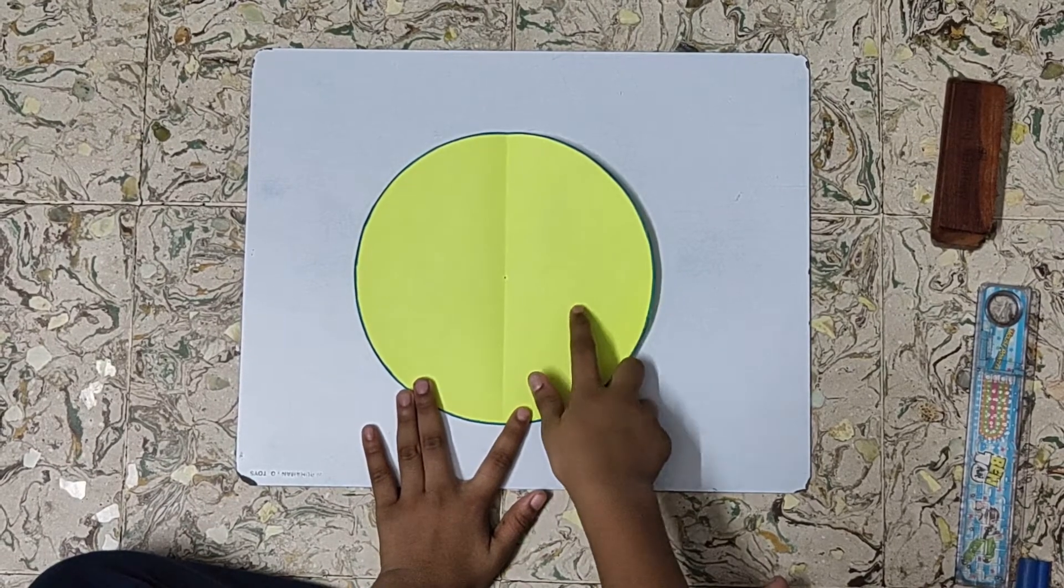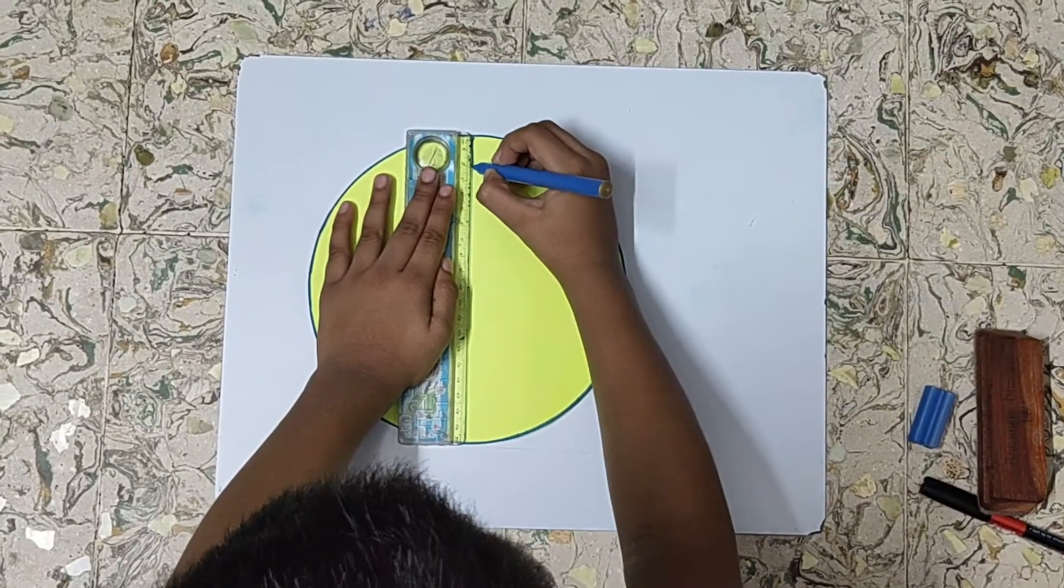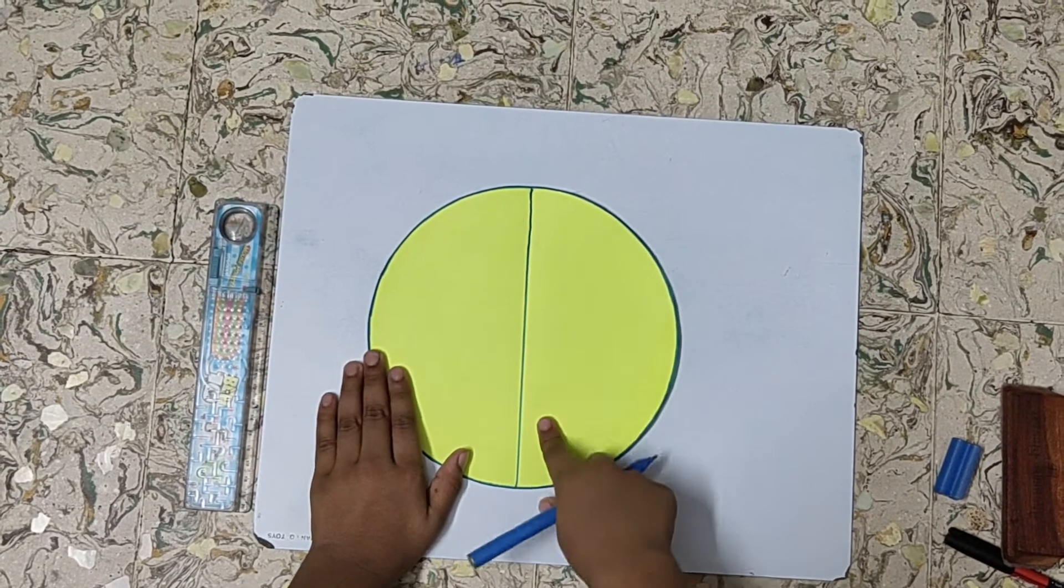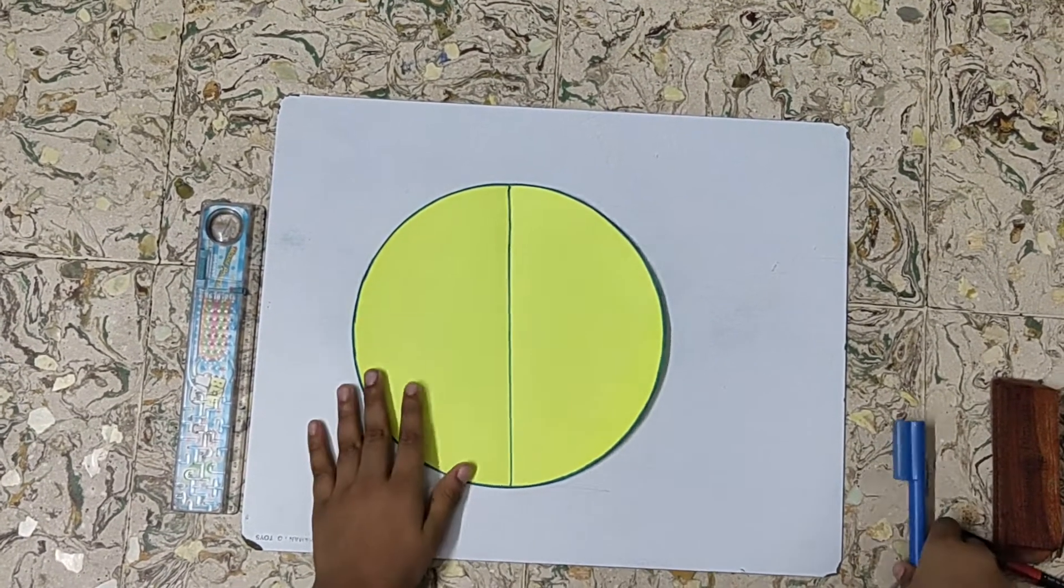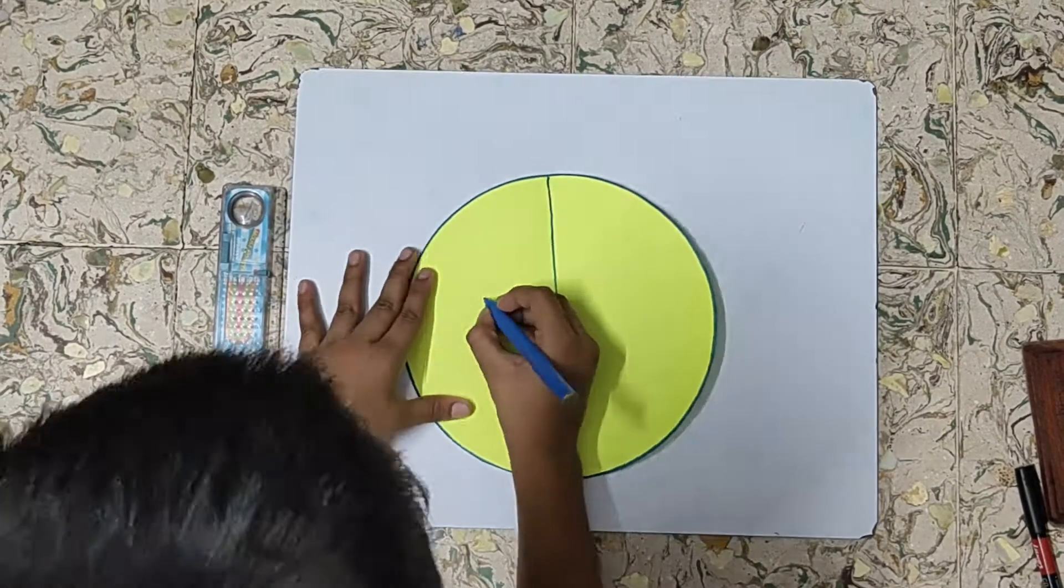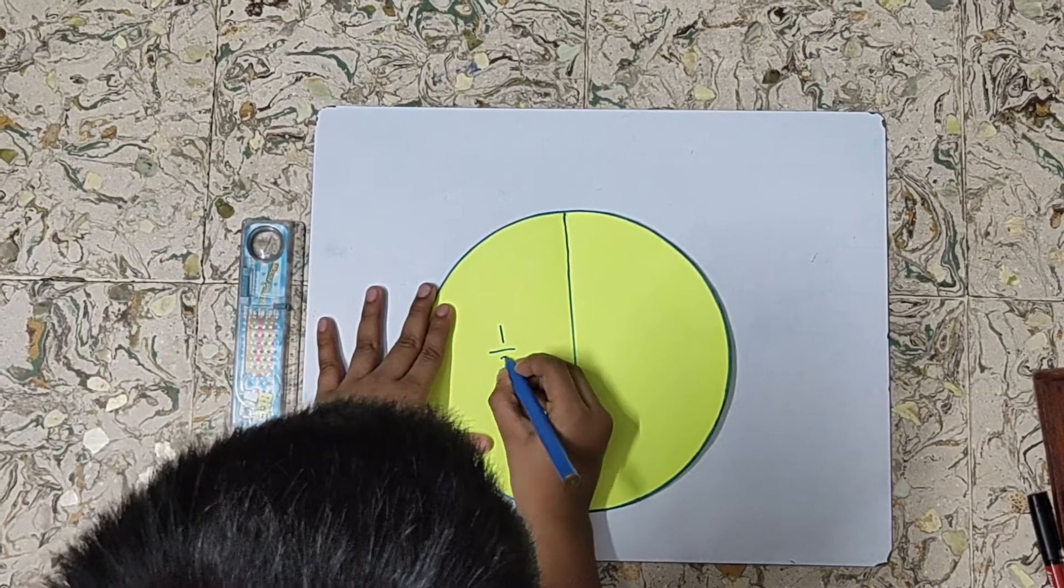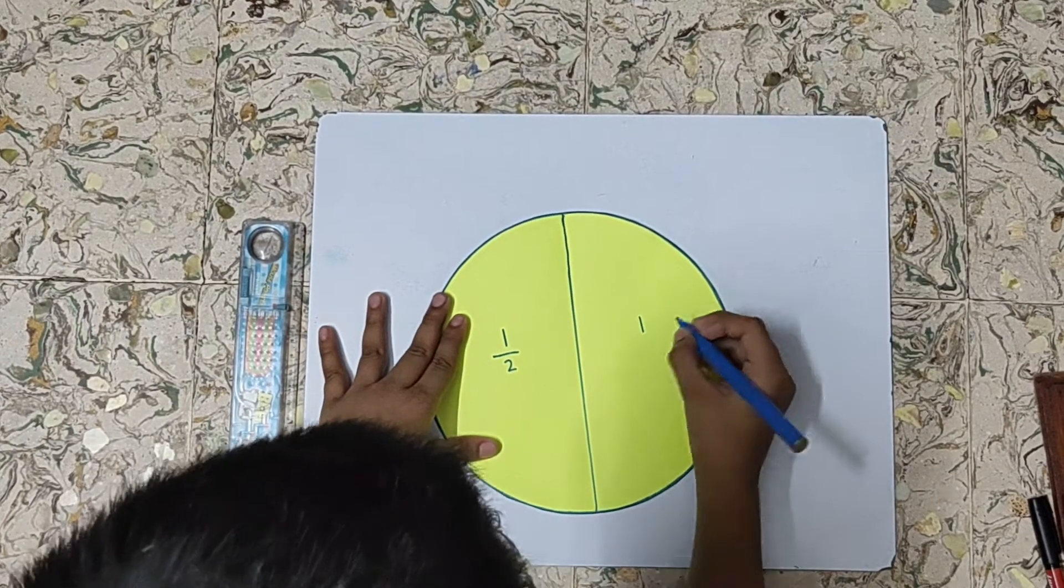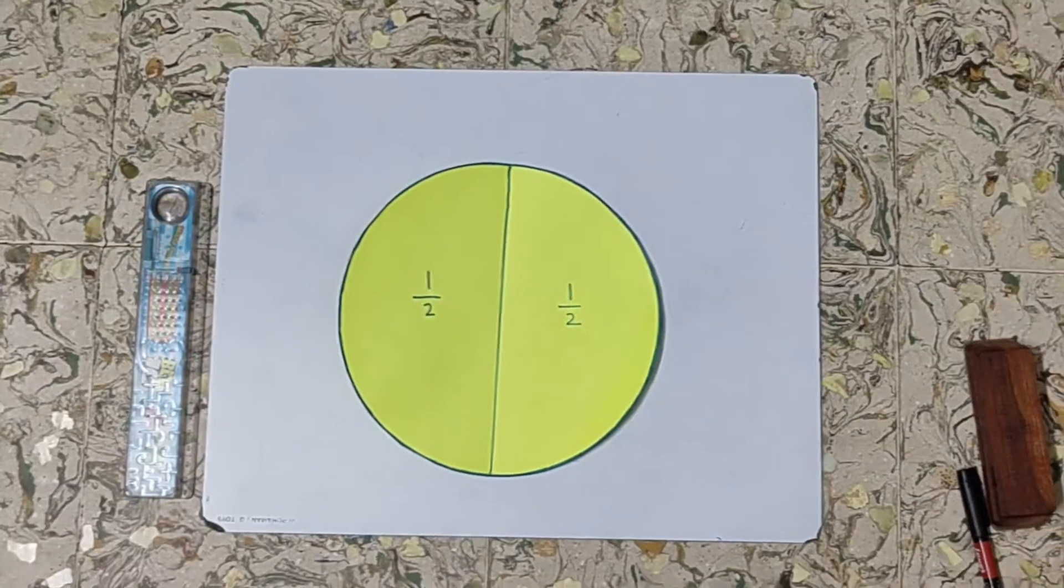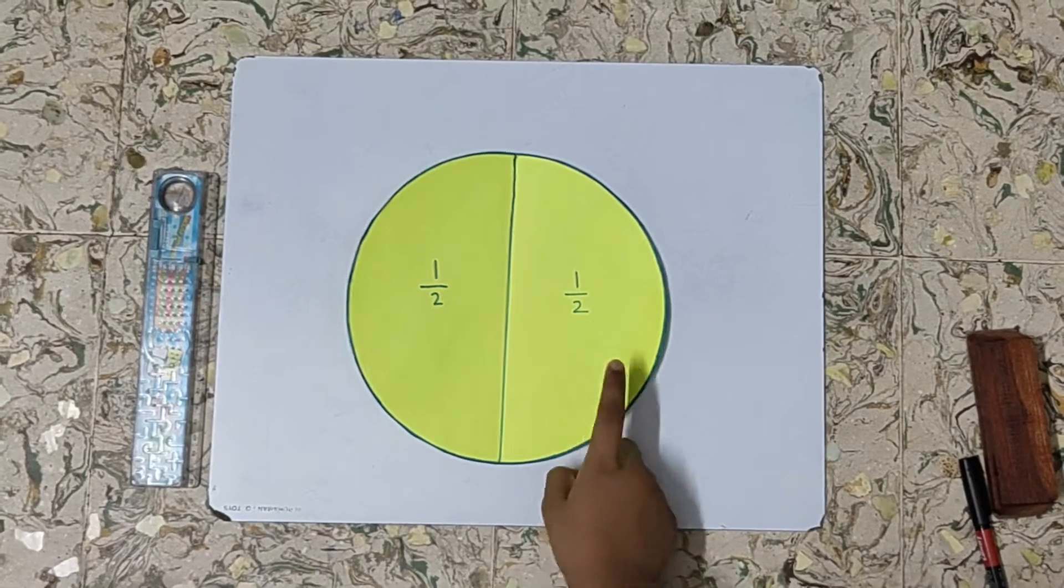Now, we will highlight the folded region. Now, I have highlighted the folded area. Now, we will write 1 by 2 on both sides. 1 by 2 also 1 by 2. So our fraction circle of 1 by 2 or half is ready.